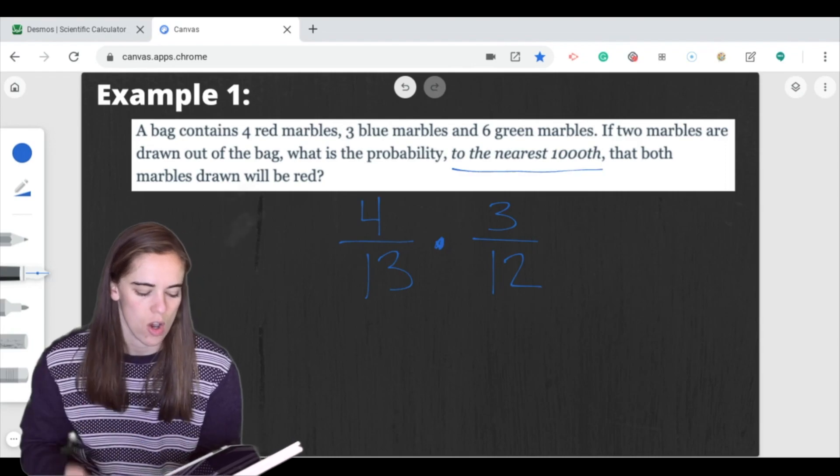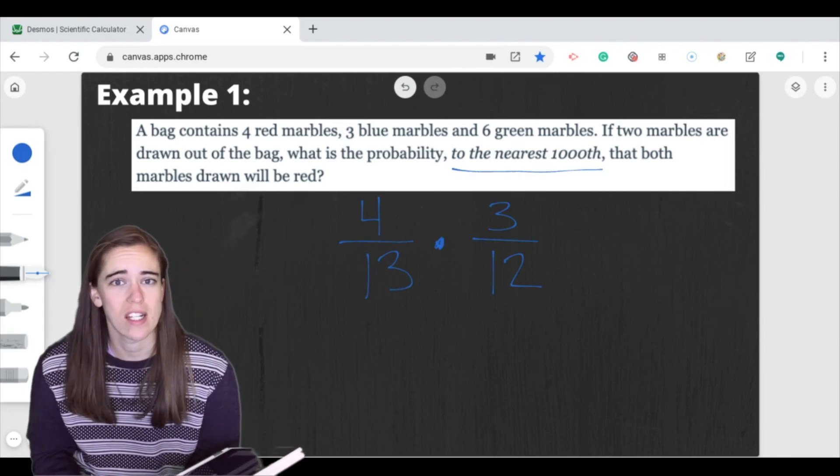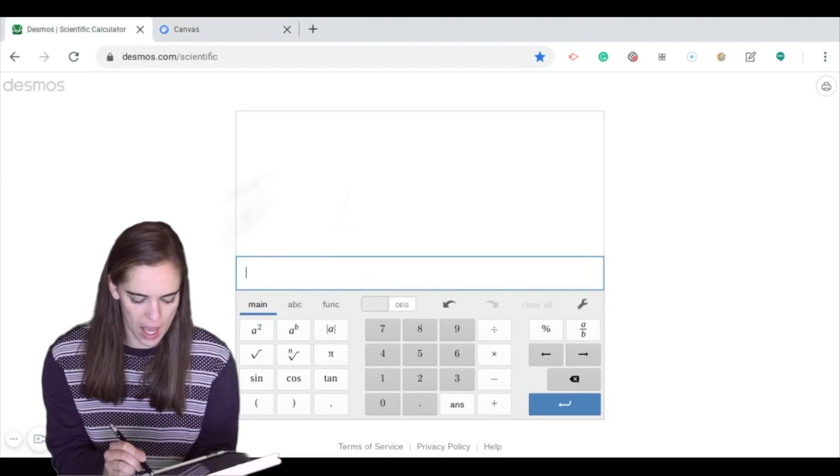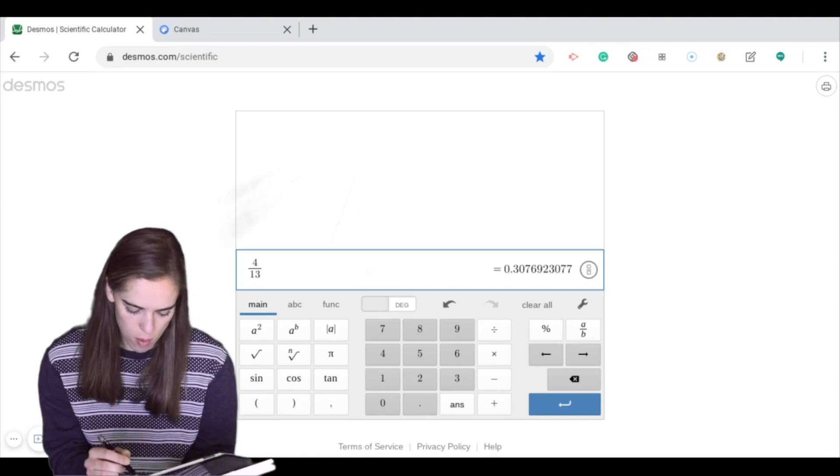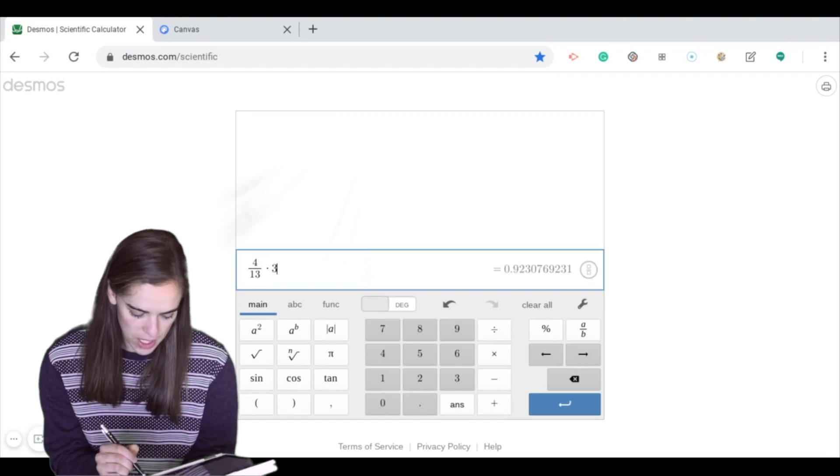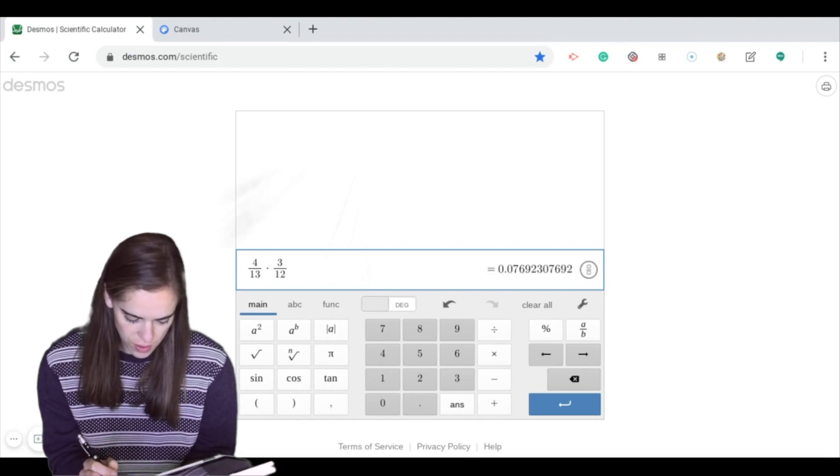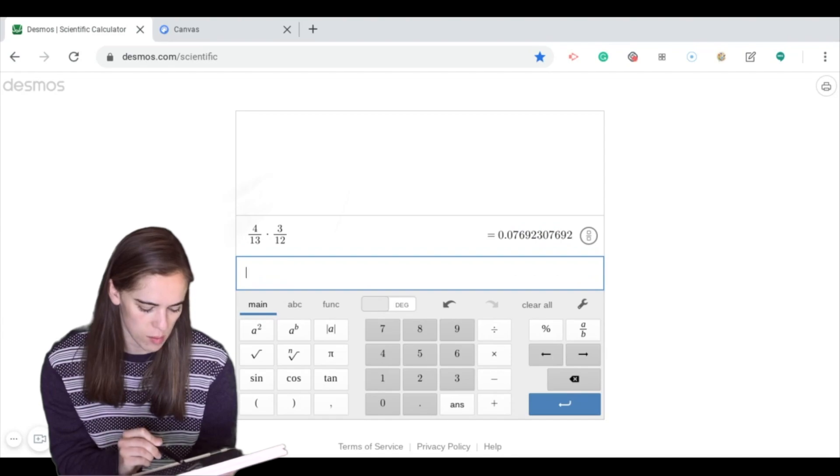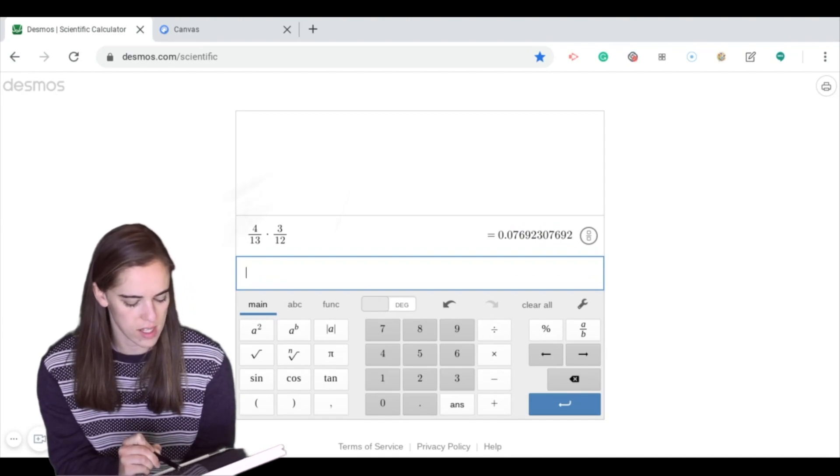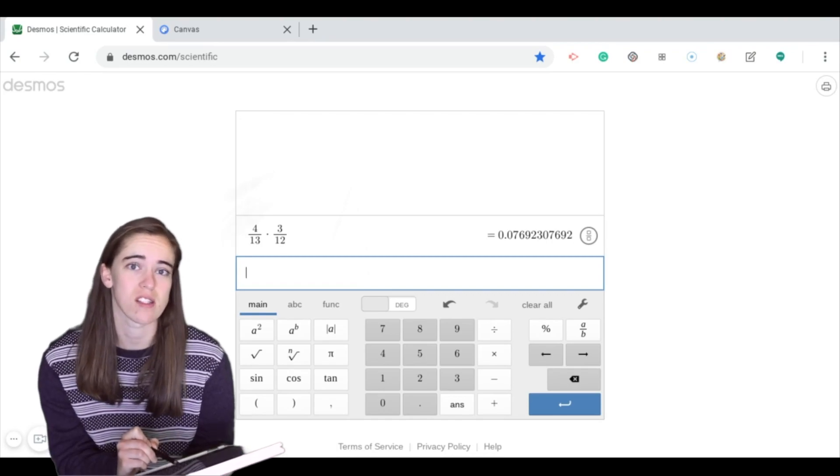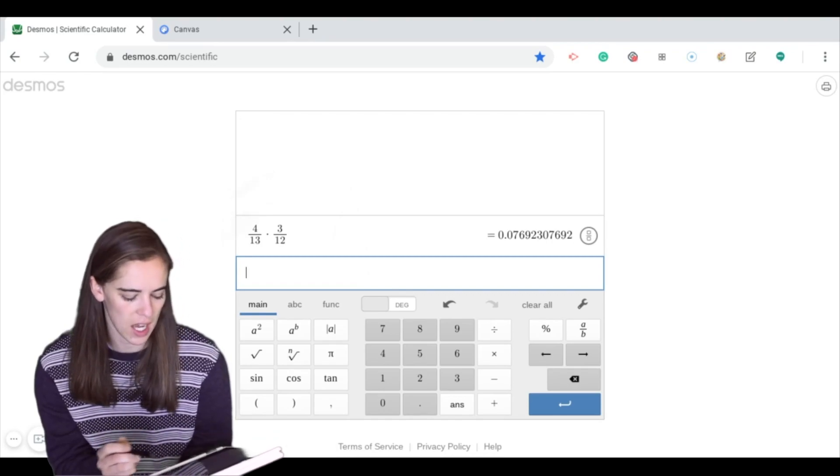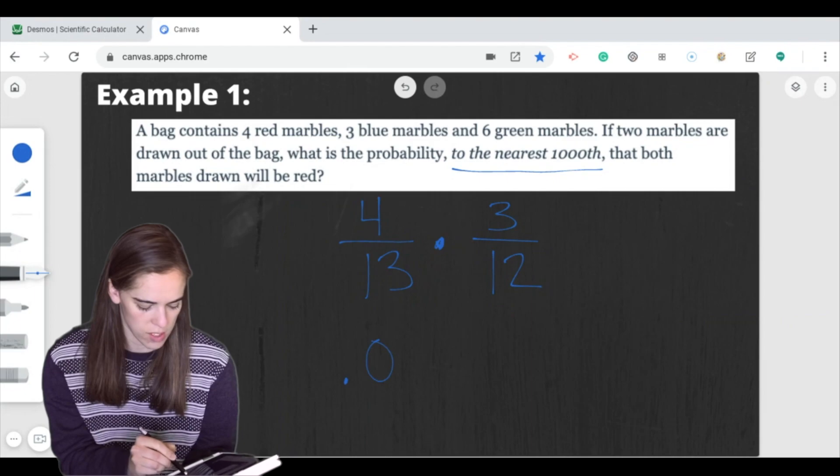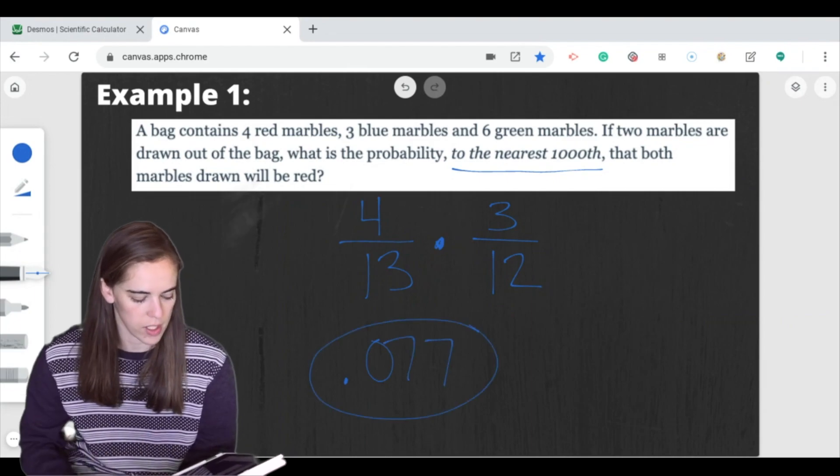And our final answer says to the nearest 1,000th. That means that we need to get our answer to the nearest 1,000th before we can enter it. So I'm going to head on over to my calculator. We're going to have 4 thirteenths. That's going to be multiplied by 3 twelfths. And for this one, we needed to round it to the nearest 1,000th. So that means I have tens, hundreds, thousands. I need to leave three decimal places. So I'm going to have 0.07. And then that 6 is going to change to a 7 because the number after it is a 5 or higher. It's a 9. So we're going to have 0.077 as our final probability for this one.